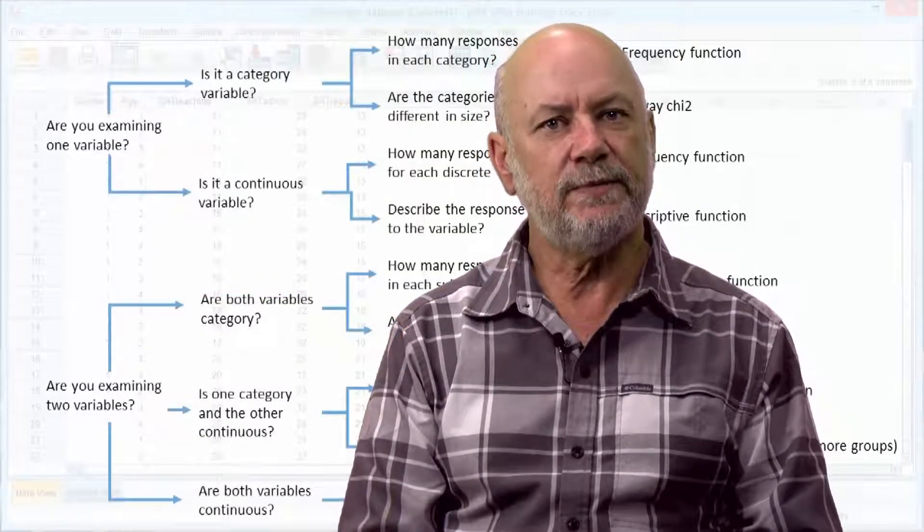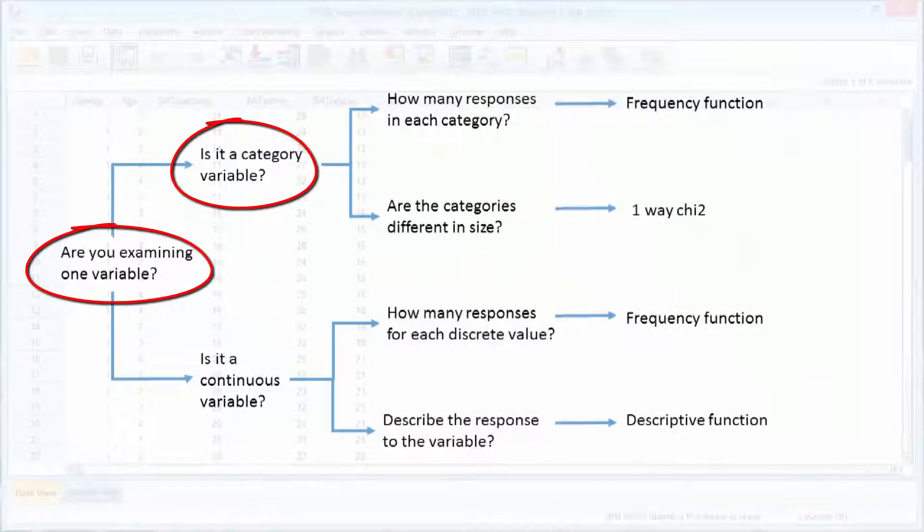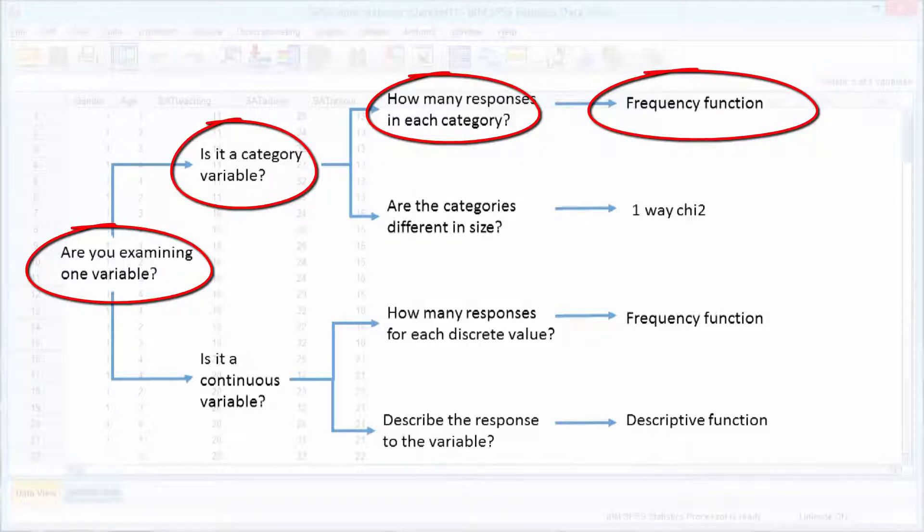So let's start with examining one variable, and it's going to be a category type question. We have two statistical tests available to us. Firstly, to count the number of responses in each of the categories, we use the frequency function of SPSS.